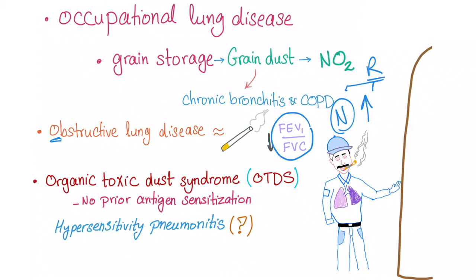Something interesting came up while preparing for this video. They used to classify this disease as hypersensitivity pneumonitis — with an allergic component, like extrinsic allergic alveolitis due to exposure to an antigen such as grain dust. However, today, when I checked Harrison's Internal Medicine and Davidson's Internal Medicine, they completely ignored the term silo fillers lung. Harrison's instead classified it as organic toxic dust syndrome, and says do not confuse it with hypersensitivity pneumonitis. So there is an argument in classification.